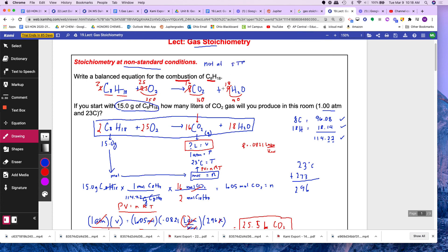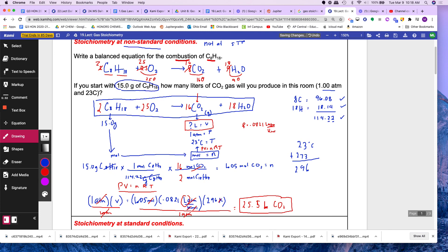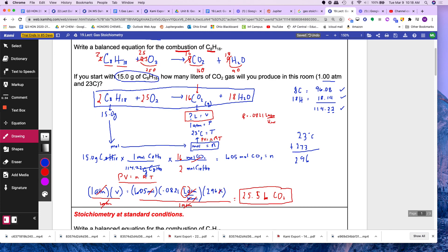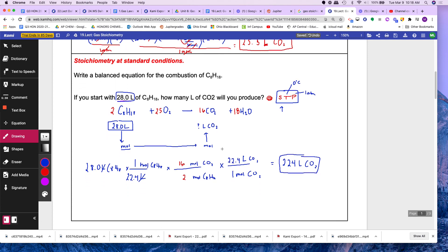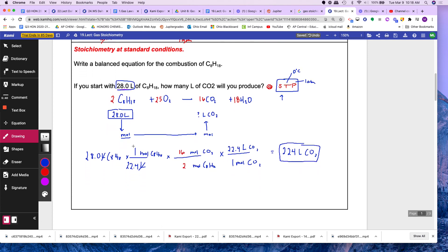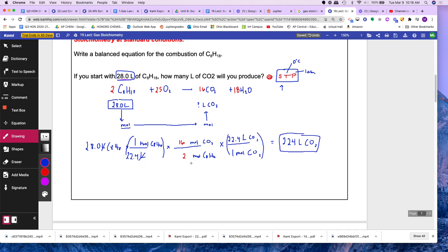If you're not at STP, you're in these conditions. They have to tell you what the conditions are. You have to use PV equals NRT. If you're at STP, then you can use the shortcut, which is this shortcut to get to the moles, from and to moles.